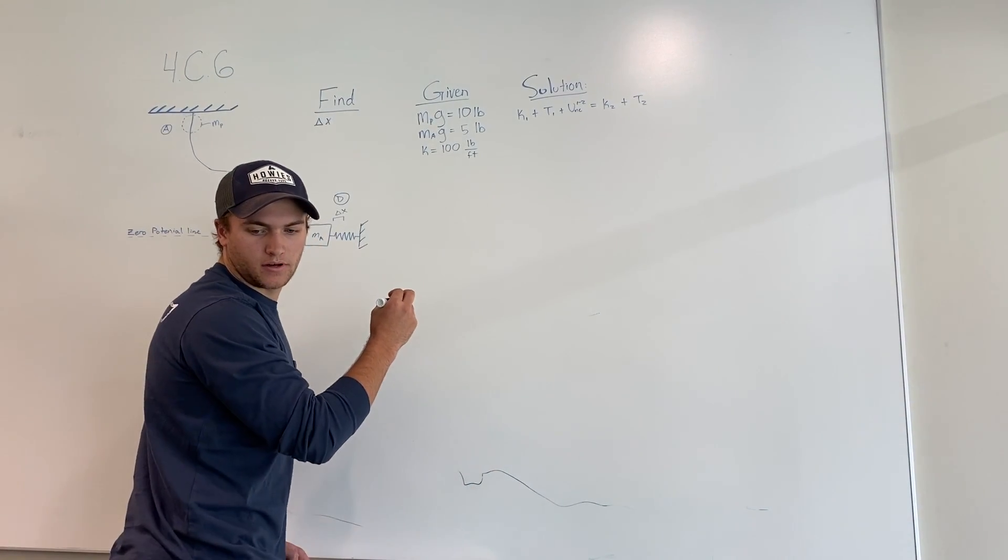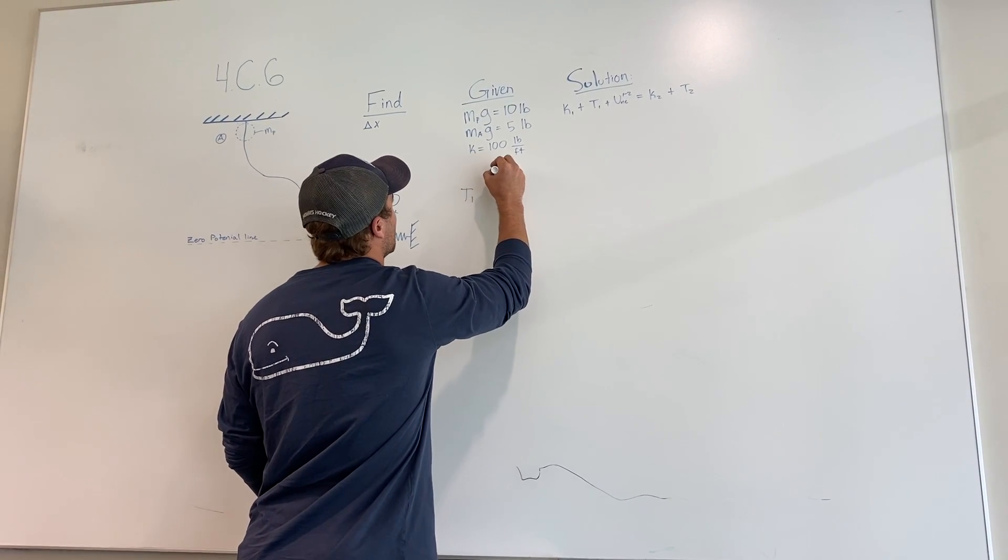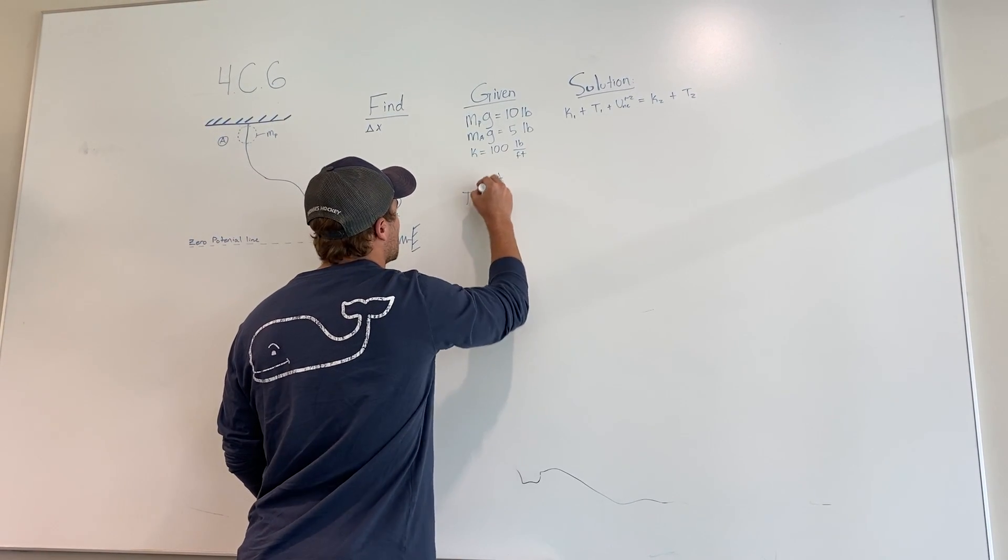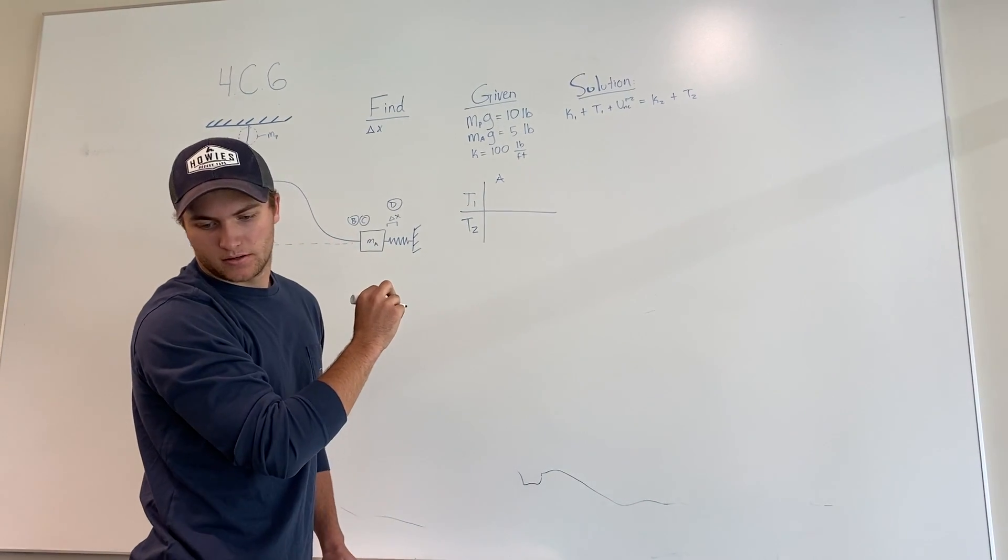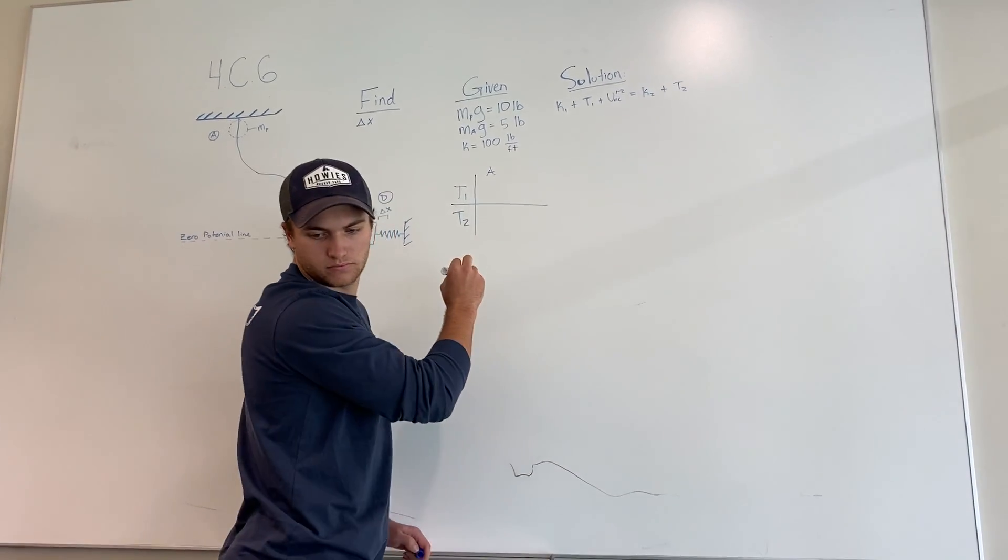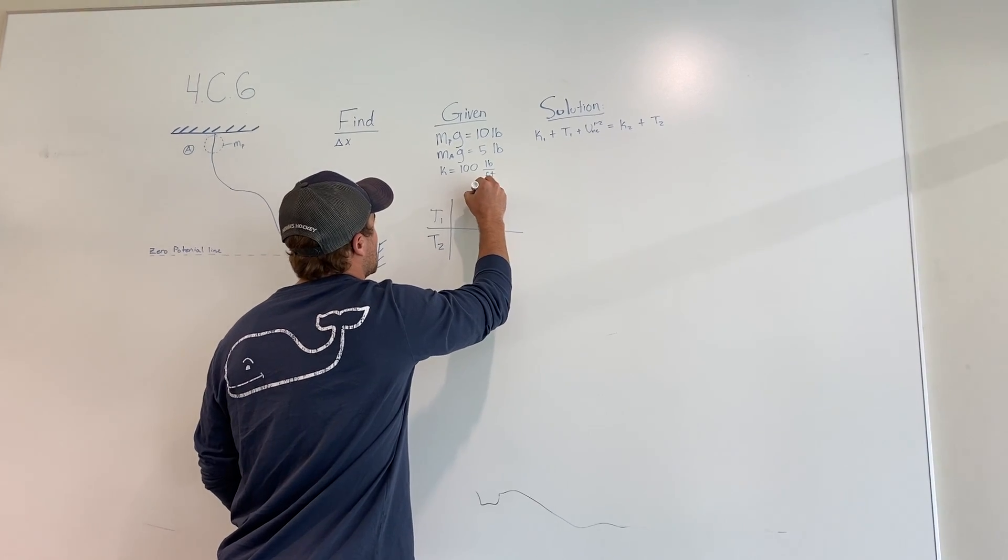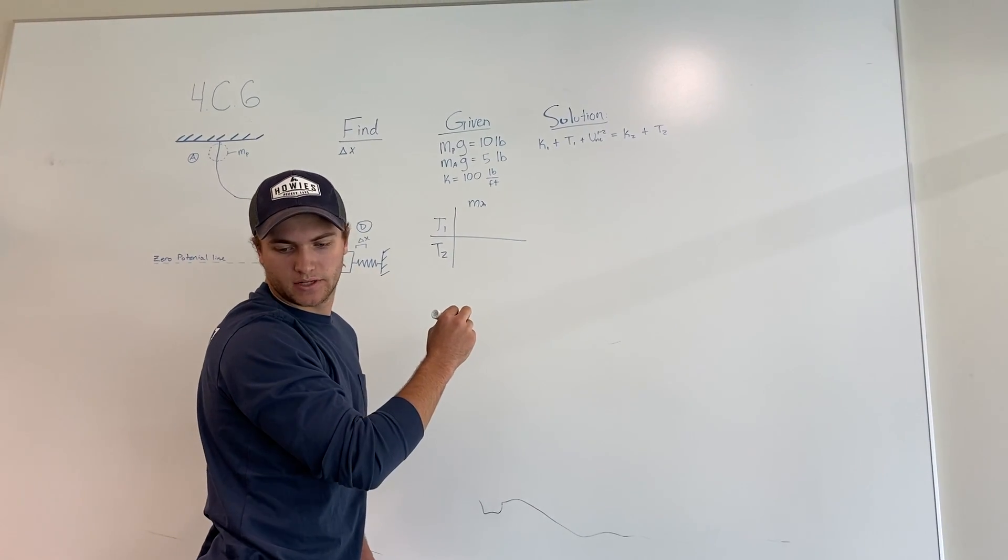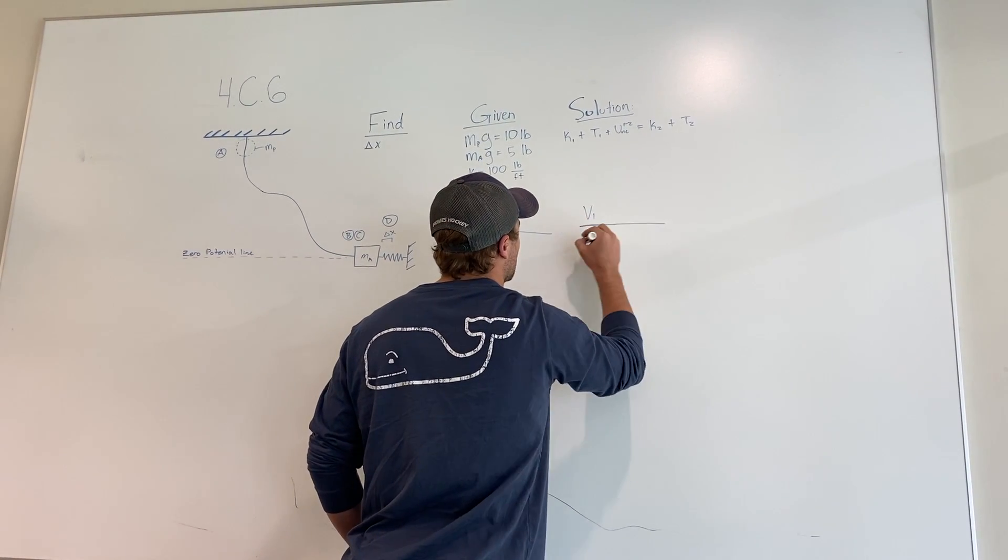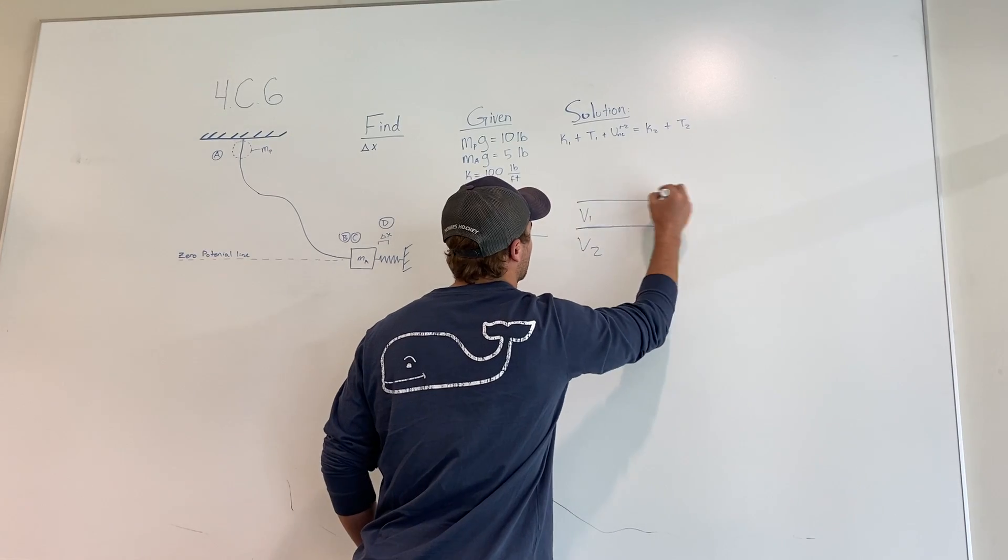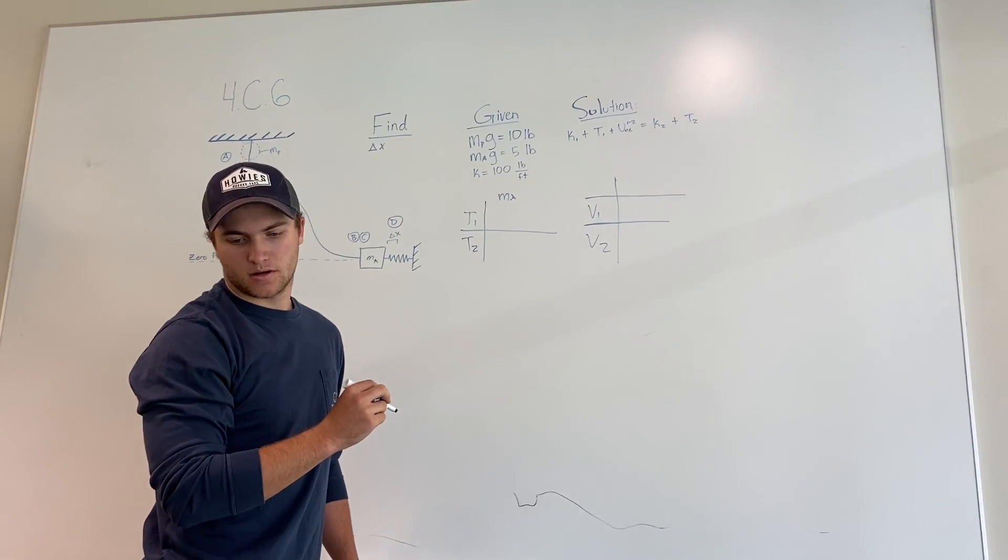So the T1 at A, T2 at A, and then for mass. And then we can have another table, which is V1 and V2 from A to B.